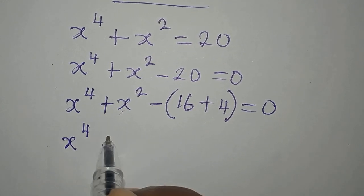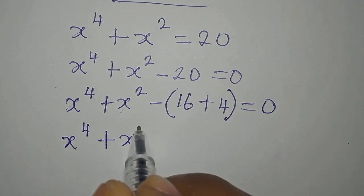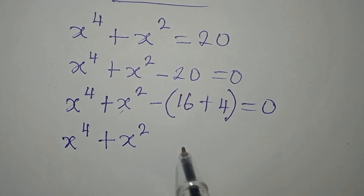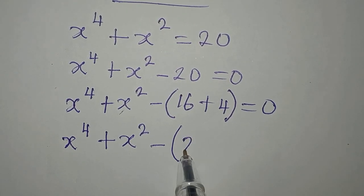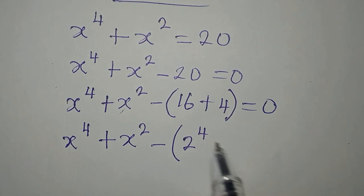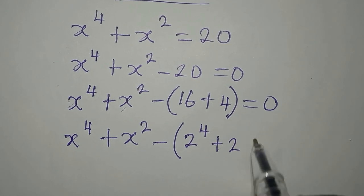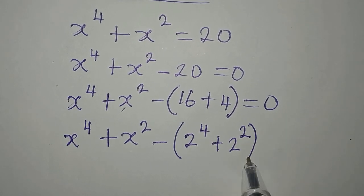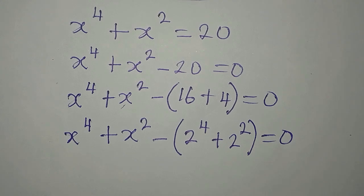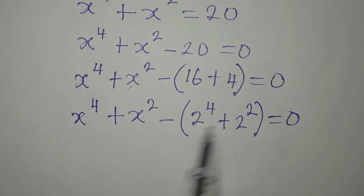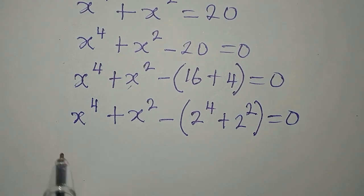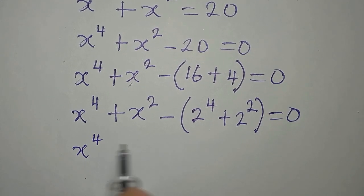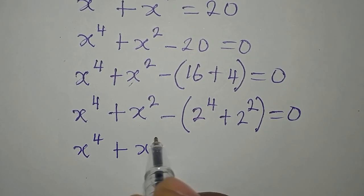Now, 16 can be written in this form and 4 can be written in this form. So we have x to the power of 4 plus x to the power of 2, minus open bracket 2 to the power of 4 plus 2 to the power of 2, everything equals 0. By looking at this now, you will see that these two groups are in the same form.